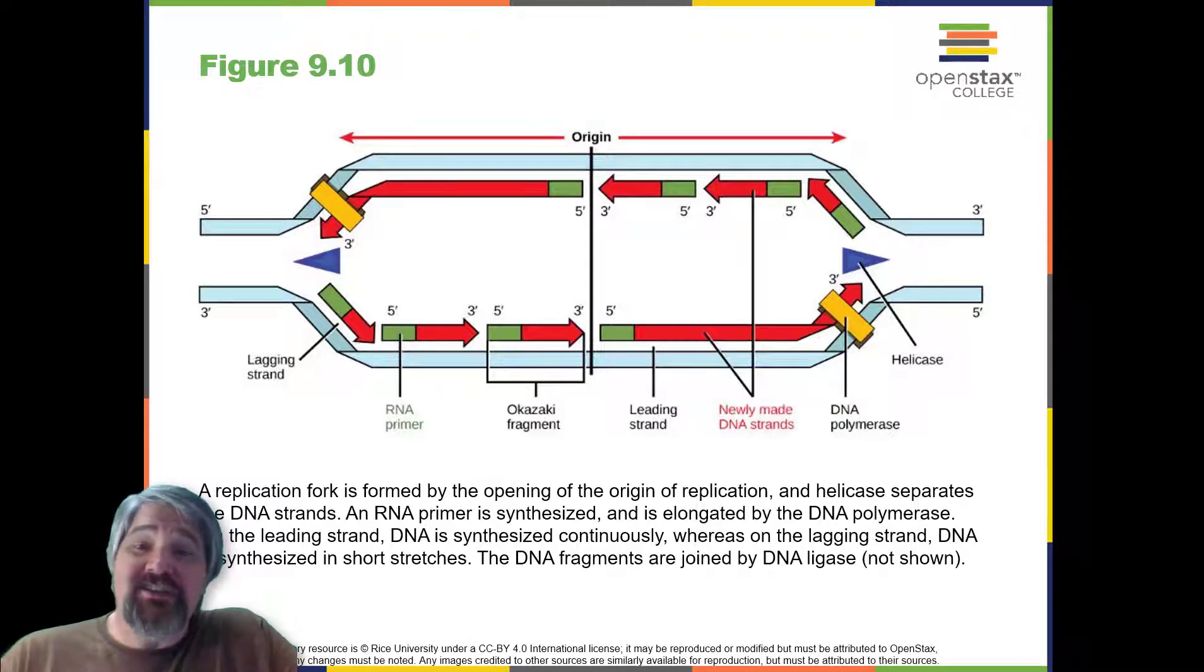During elongation, an enzyme called DNA polymerase adds DNA nucleotides to the 3' end of the template. Because DNA polymerase can only add new nucleotides at the end of the backbone, a primer sequence, which provides this starting point, is added with complementary RNA nucleotides. This primer is removed later, and the nucleotides are replaced with DNA nucleotides.